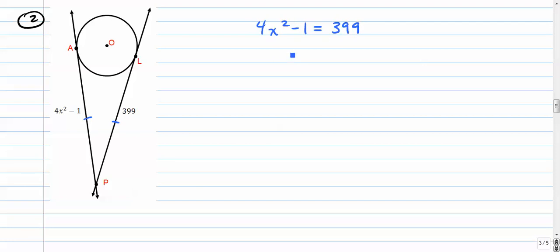4x squared minus 1 equals 399. We're going to add 1 to both sides, so we get 4x squared equals 400. We're going to divide by 4 on both sides, so we get x squared equals 100. Take the square root of both sides, we get x equals the square root of 100. And that actually has two answers, positive 10 and negative 10. We'll write it like this, positive and negative 10.